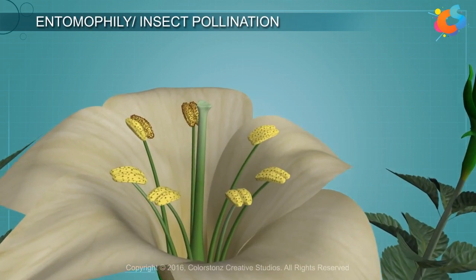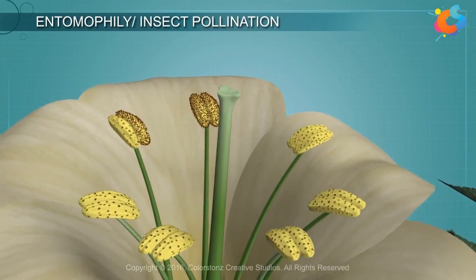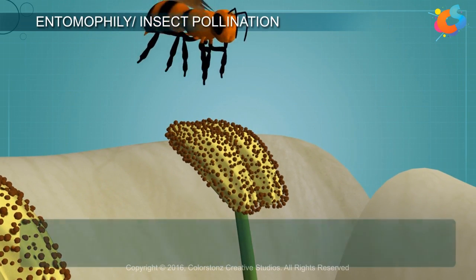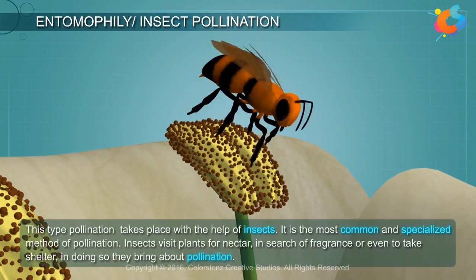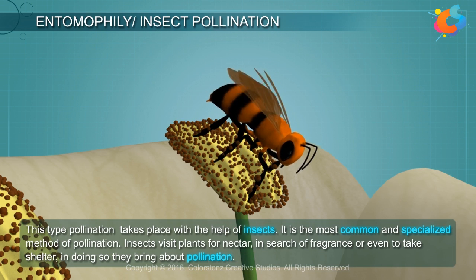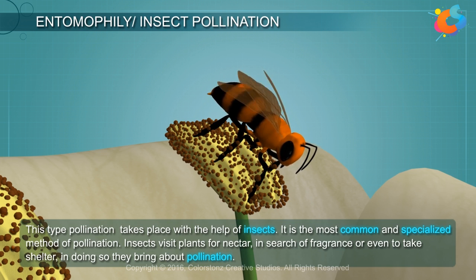Entomophily, or insect pollination, is the most common and specialized method of pollination. This type of pollination takes place with the help of insects. Insects visit plants for nectar, in search of fragrance, or even to take shelter. In doing so, they bring about pollination.